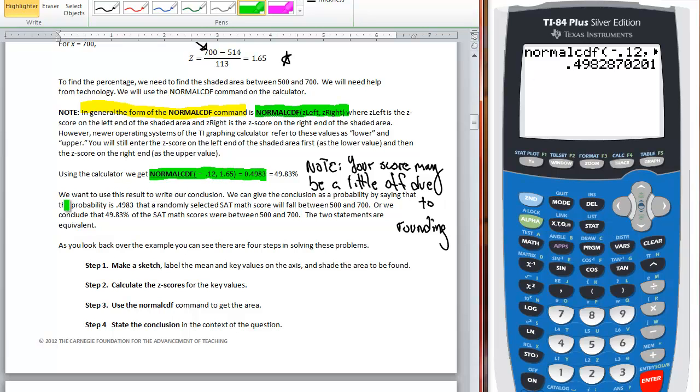So we want to use this result to write our conclusion. And the conclusion that you're going to write is 49.83% of the SAT math scores were between 500 and 700. And this gives you your area that we got from our normal CDF as a decimal. The SAT math score is the trait that we are interested in, and that needs to be stated. And then these are the values that we were interested in, and those have to go there. So this area is related to these values for this trait, and that makes us happy.